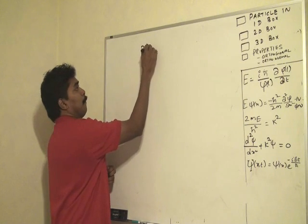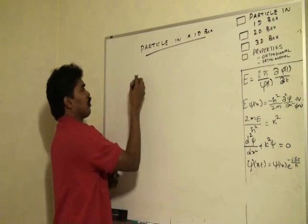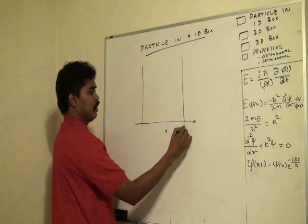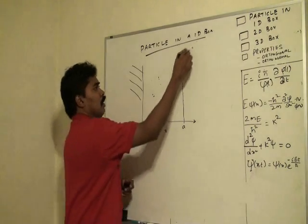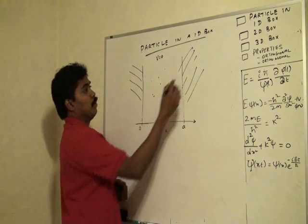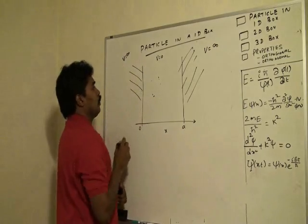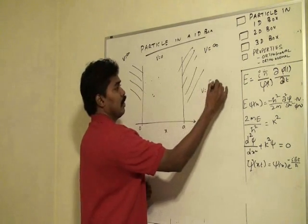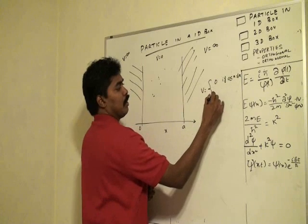So this is a particle in a 1D box. Let us take x — the particle exists between 0 and a. The potential of the particle within this region is 0, whereas the potential outside the region is infinity. So the potential function is given as 0 inside, and infinity otherwise.